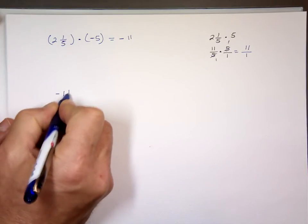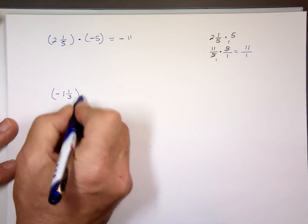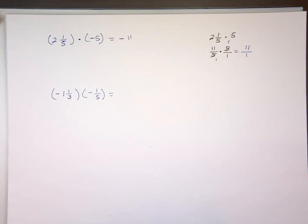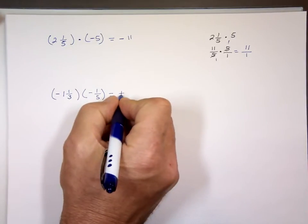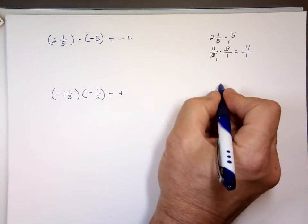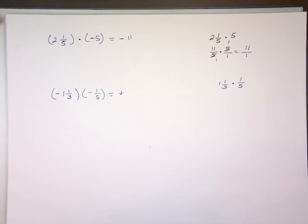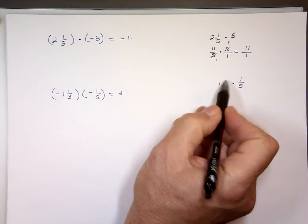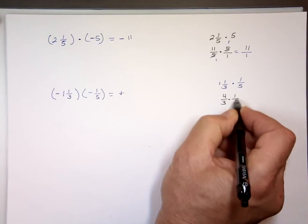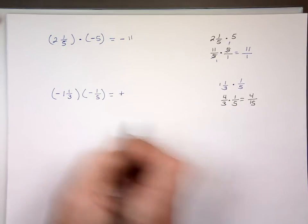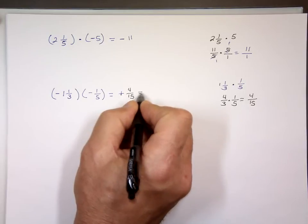Negative one and one third times negative one fifth. Same sign or different signs? Same. The result is positive. So let's go to the side and multiply the absolute values. One and one third: three times one is three, plus one is four over three. Times one over five. Four times one is four, three times five is fifteen. So the answer is positive four fifteenths.